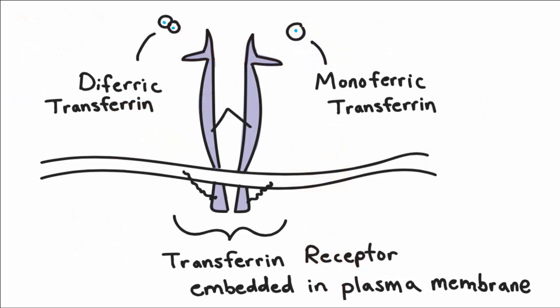The cell transferrin receptor is a protein dimer of two identical subunits, 760 amino acids each. These dimers connect to one another by disulfide bridges. The transferrin receptor is embedded in the cell membrane.